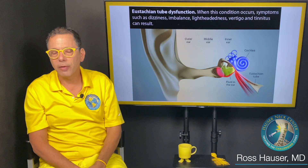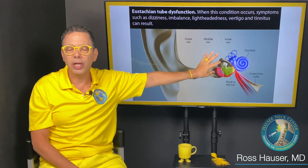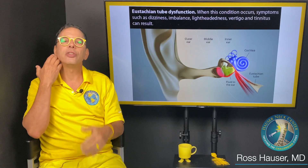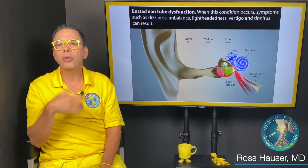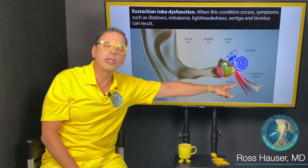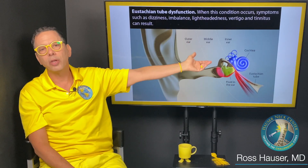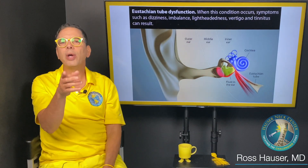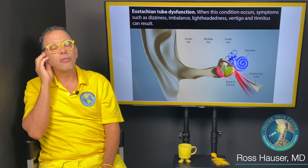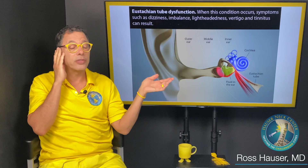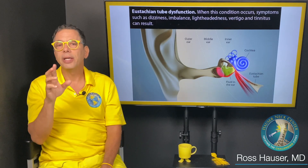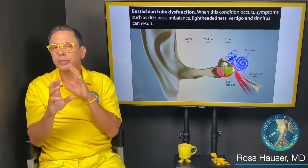All the cells of the body make fluid that the body must get rid of, and the ear does this by opening the eustachian tube — fluid drains into your throat and into your digestive tract. When the eustachian tube doesn't open or close normally, fluid accumulates. If you have ringing in the ear and notice the ear feels more full on one side, that's a sign of cervical instability affecting the muscles that open your eustachian tube.